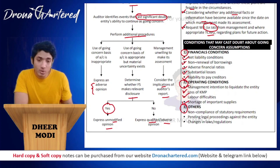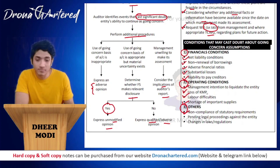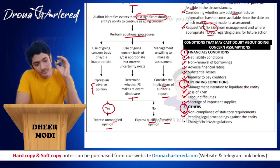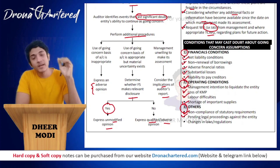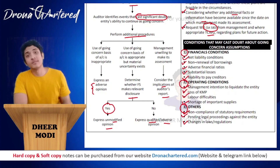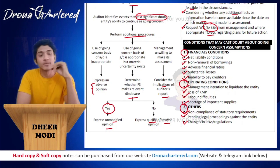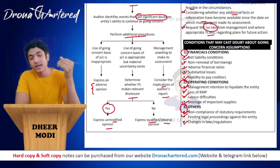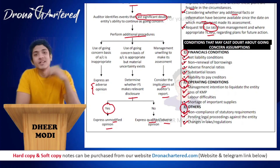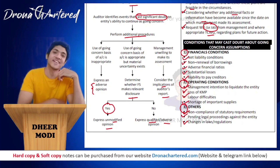Third is others: non-compliance with statutory requirements, or if a court orders winding up. Second is pending legal proceedings against the entity — sometimes cases against the company might make the company go bankrupt. Last is changes in laws and regulations — for example, the law with regards to use of plastic has shut down so many plastic industries. With this we are done with SA 570, that is going concern, and I will see you in the next class.